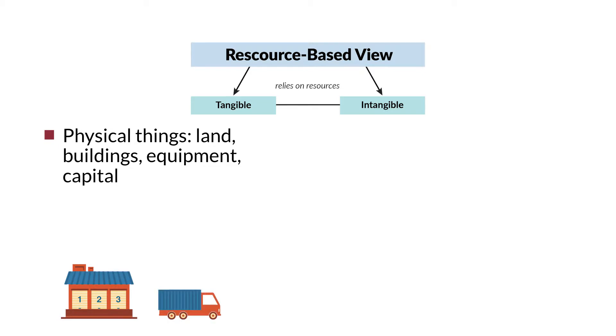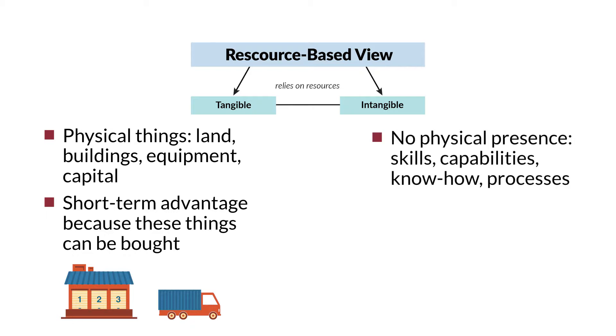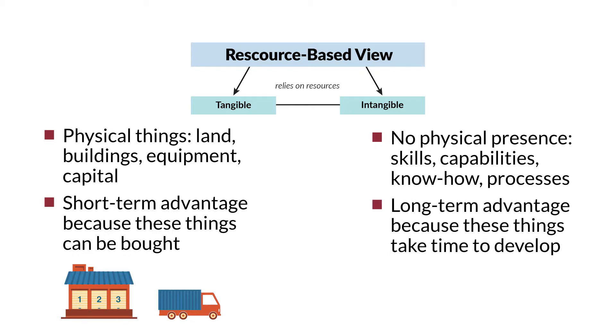Tangible resources can provide an advantage, but that advantage is often short-term because tangible resources can often be purchased in an open market. On the other hand, intangible resources have no physical presence — we cannot see or touch them. These are things like skills, capabilities, know-how, or process expertise. Intangible resources take time to develop and cannot be easily purchased. Any firm can purchase distribution centers or a fleet of trucks — all it takes is cash. However, the know-how to leverage distribution and transportation capabilities in the most efficient and effective manner is an intangible resource that takes time to develop. That type of intellectual expertise is the main source of competitive advantage.